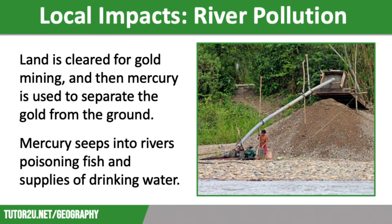Another local impact is river pollution. Gold mining not only causes deforestation as trees are cleared to make way for mineral exploitation, but it also leads to polluted waterways as mercury is often used to separate gold. This then seeps into the ground, poisoning fish as well as inhabitants of nearby settlements, particularly through contaminated drinking water supplies. Rivers are also being polluted by silt from soil erosion.